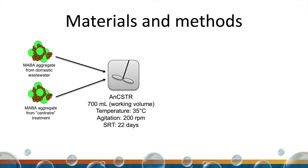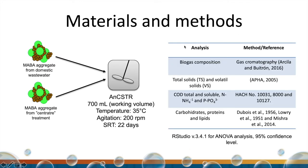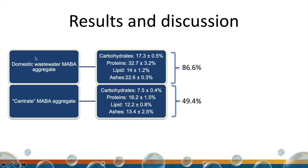Ambos agregados MAVA fueron evaluados en digestión anaerobia en un reactor completamente agitado. En la caracterización de los agregados MAVA de agua residual doméstica, el contenido de carbohidratos, proteínas, lípidos y cenizas sumó 86.6% de la composición en términos de sólidos totales. Una menor composición de 49.4% se obtuvo en los agregados MAVA de centrate. Este bajo valor puede atribuirse a la existencia de compuestos no medidos y a que en los sistemas microalga-bacteria se emplean consorcios mixtos, con diversidad de microalgas y bacterias que influye en la composición de los agregados generados.